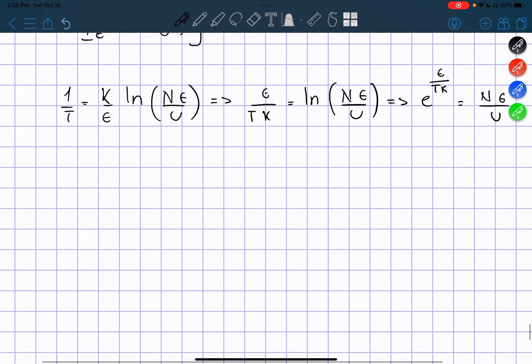So now we solve by U, multiply both sides by U. We're going to get U is equals to N times the constant divided by E to the power of the constant divided by K T. Or, simply, N constant, E to the power of negative, the constant divided by K T. And this is our final solution.